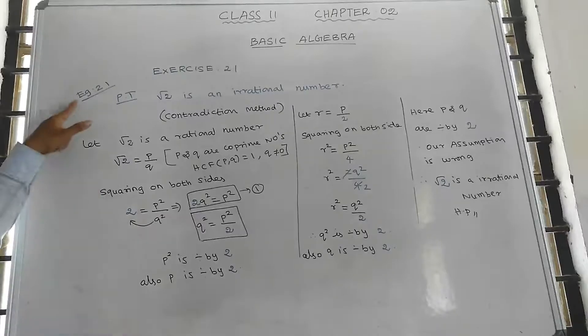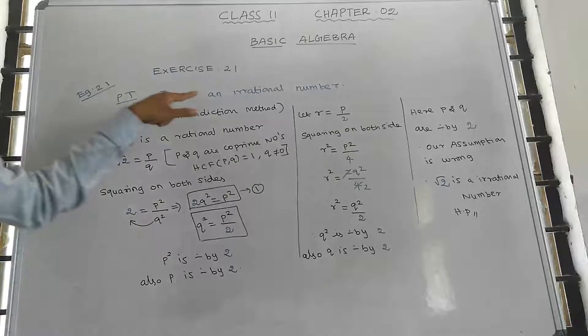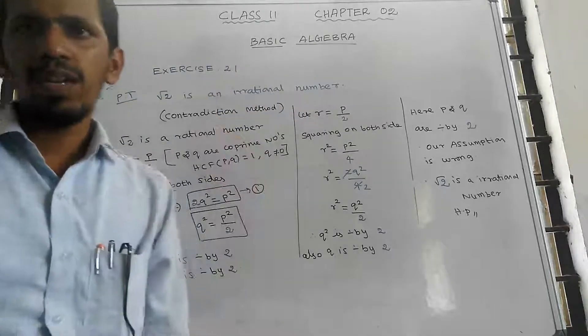Assalamualaikum students. Example 2.1: prove that root 2 is an irrational number.